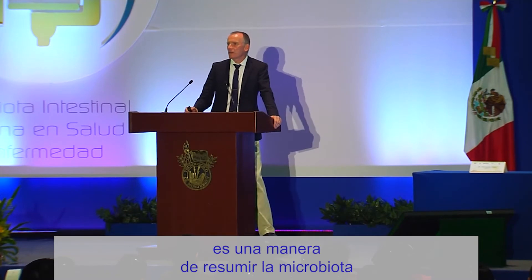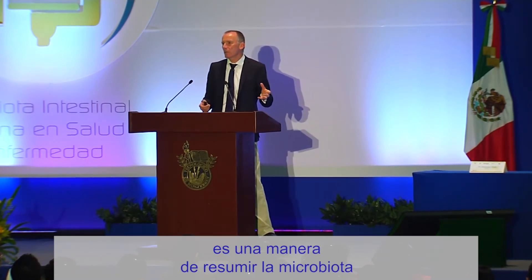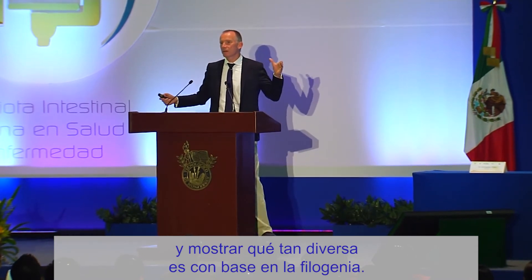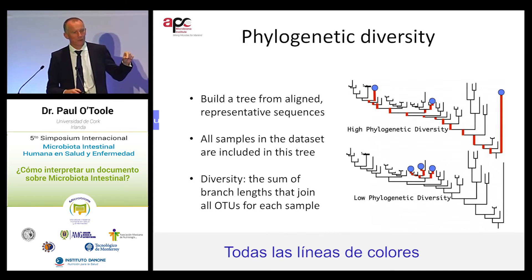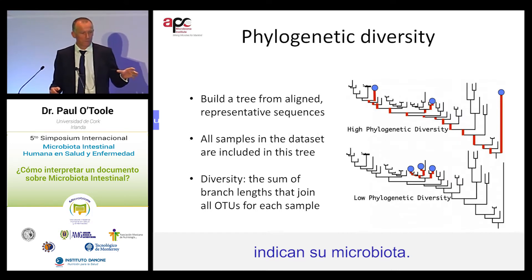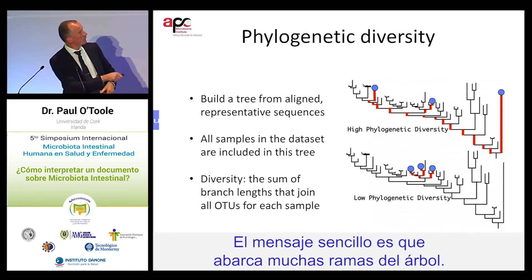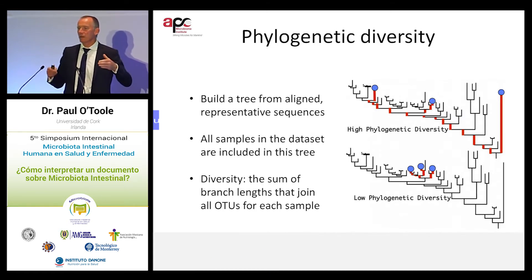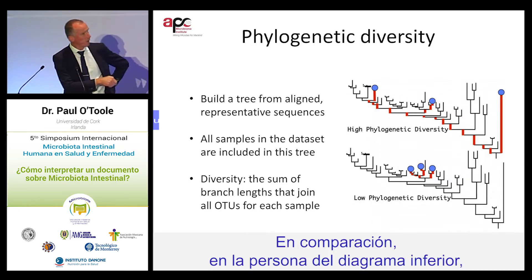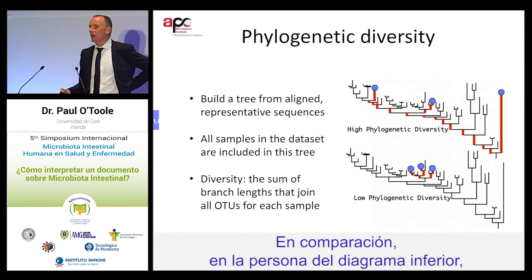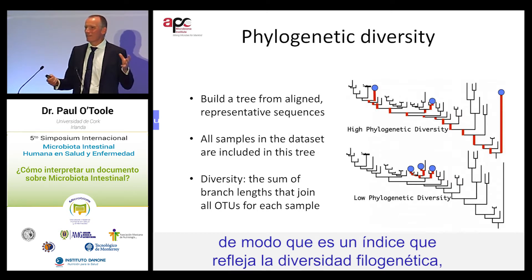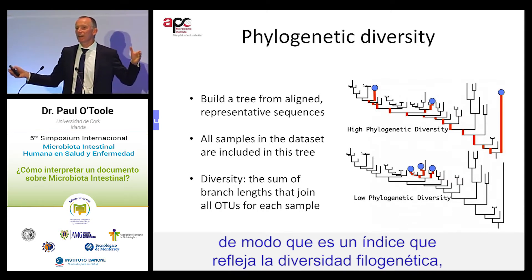Phylogenetic diversity is a way of summarizing the microbiota and showing how diverse it is based on the phylogeny. All of the colored lines indicate its microbiota, and the simple message is that it's covering lots of branches of the tree — the microbiota covers a broad phylogenetic range. In comparison, the person in the lower diagram has all of its microbiota residing on one branch of the tree, indicating low phylogenetic diversity.